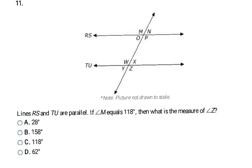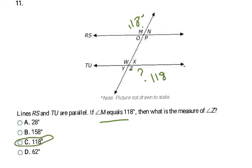With two parallel lines, if angle M is 118 degrees, what is the measure of angle Z? Writing 118 degrees by M, angles M and Z are alternate exterior angles, which are congruent when lines are parallel. So if M is 118 degrees, then Z is 118 degrees. My answer is C.